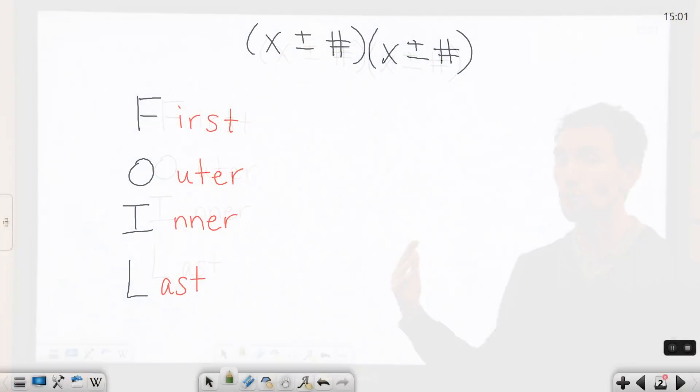So the FOIL method is used whenever you have two binomials that are being multiplied together. And a binomial will be written in parentheses as something like x plus or minus a number, and then times another x plus or minus some other number. The way you can multiply those together or simplify them is using the FOIL method. F stands for multiplying the first terms together, which are going to be this term and this term. It's the first one in each binomial.